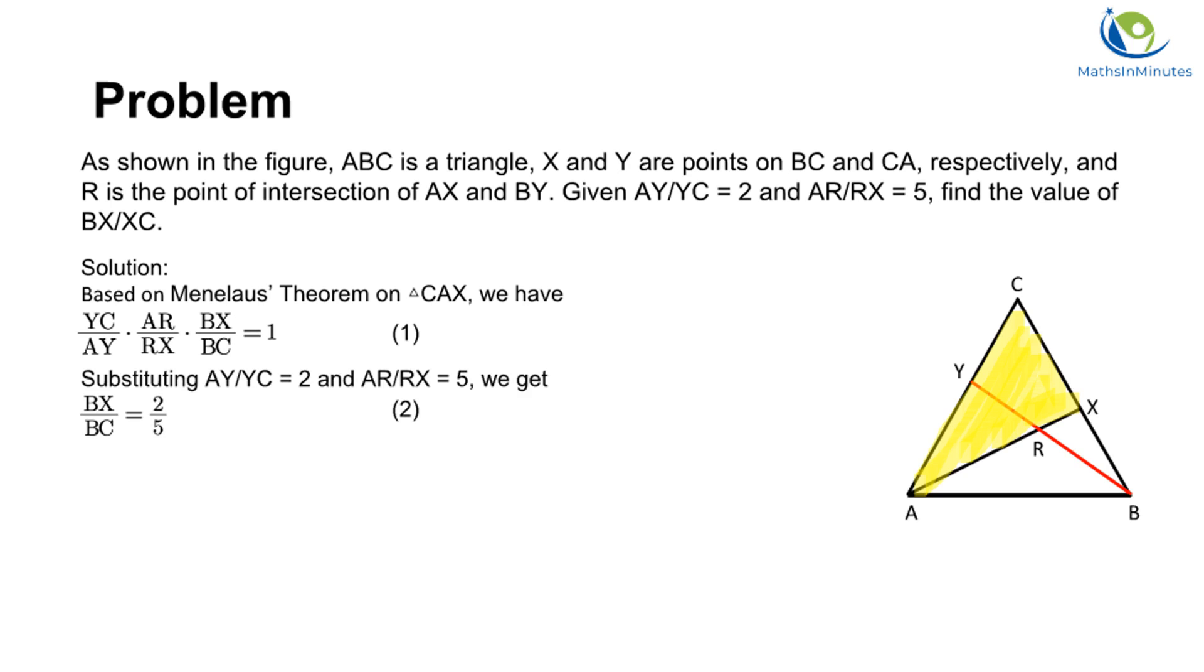By substituting the values of AY over YC and AR over RX, we get BX over BC equal to 2 over 5.